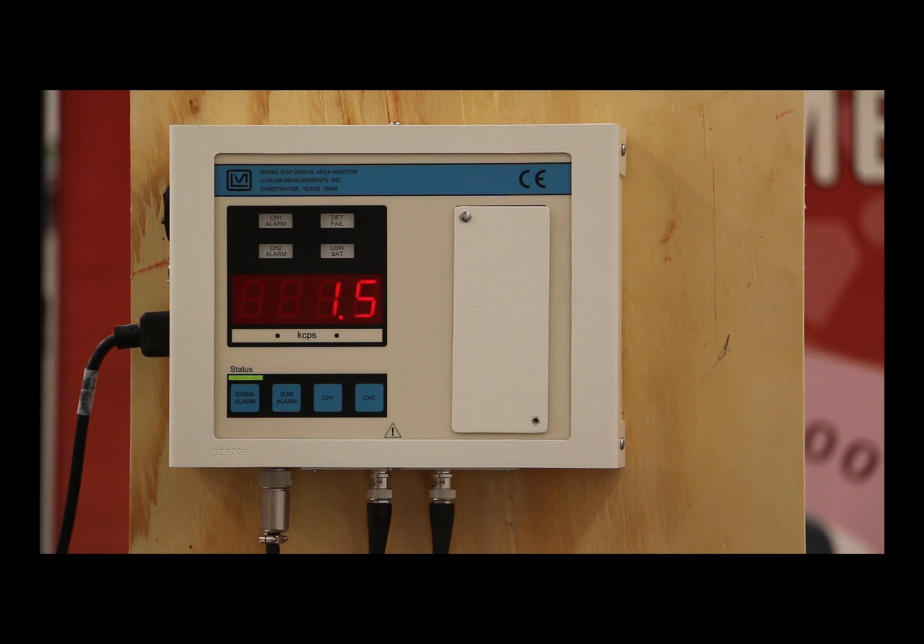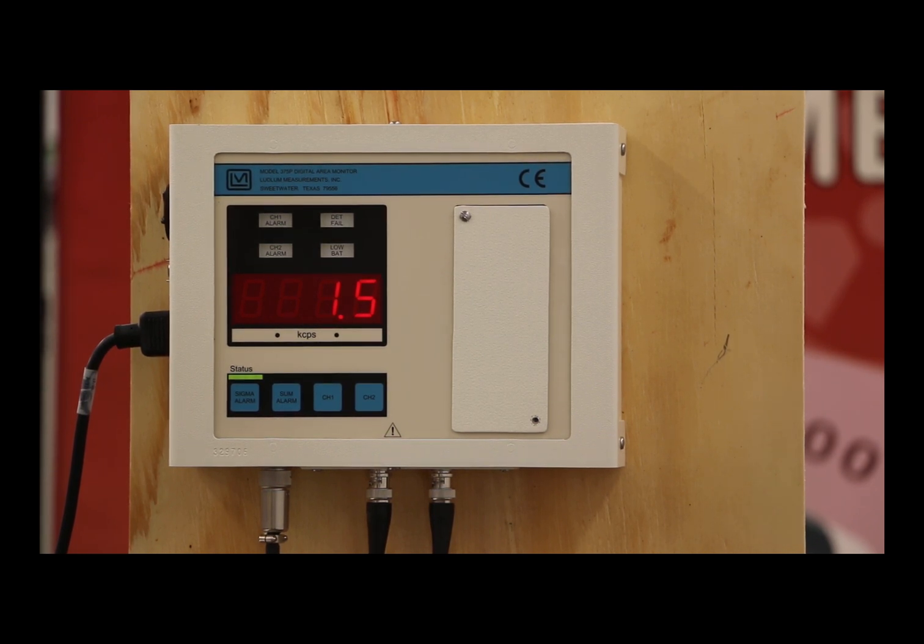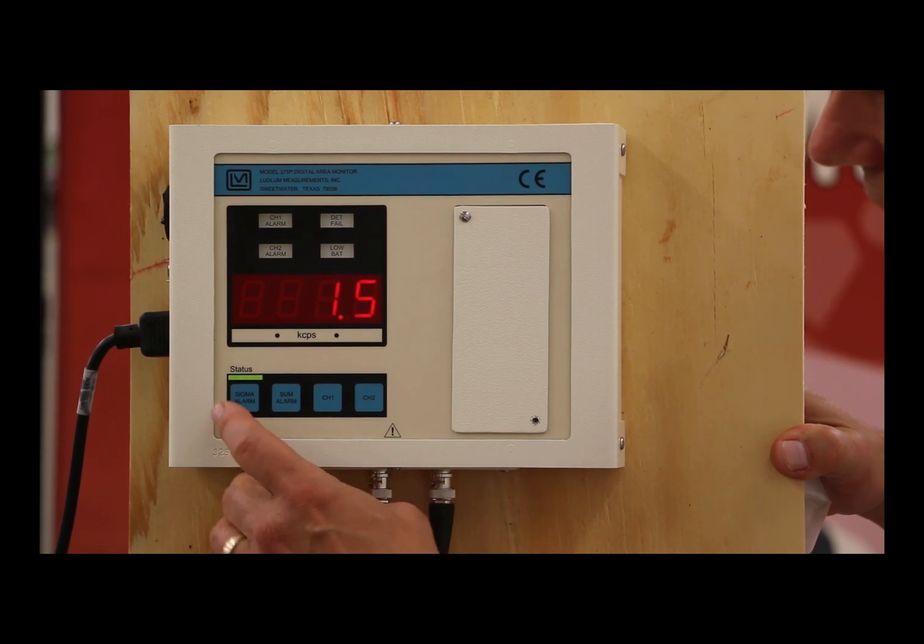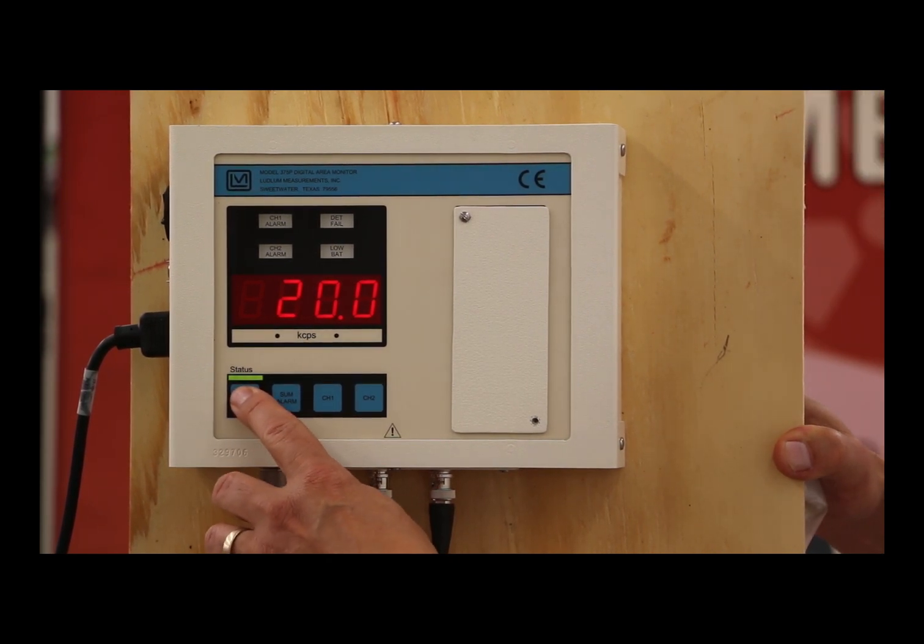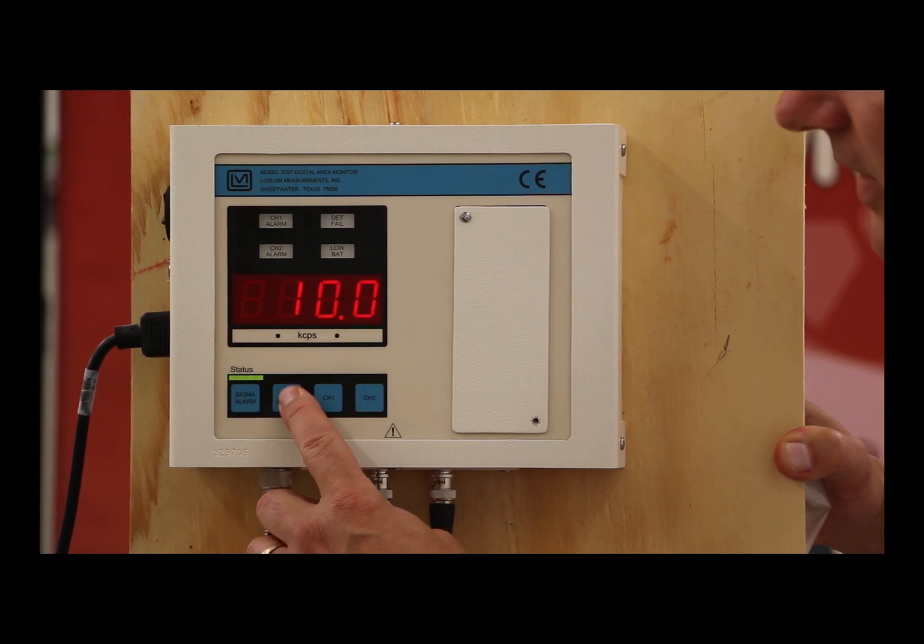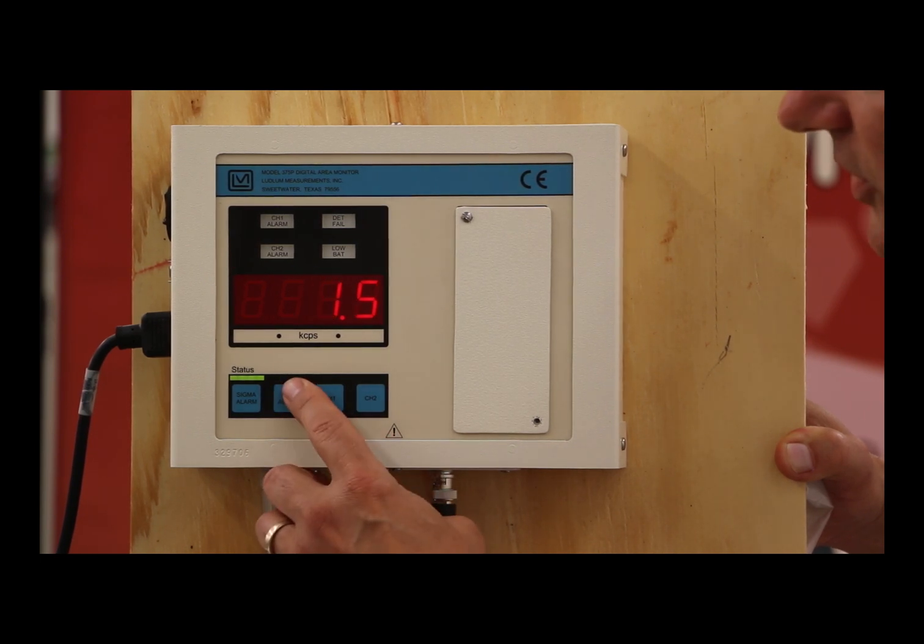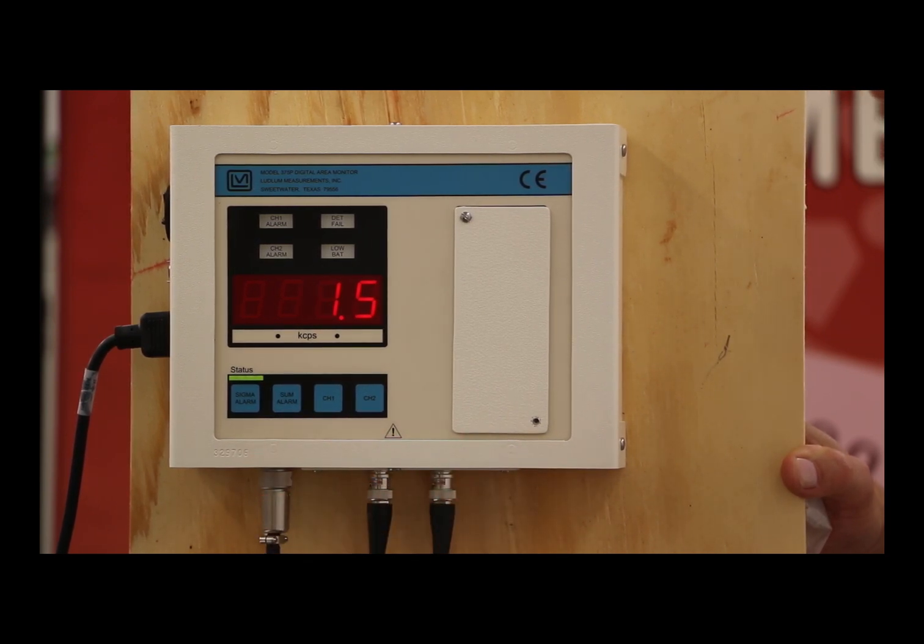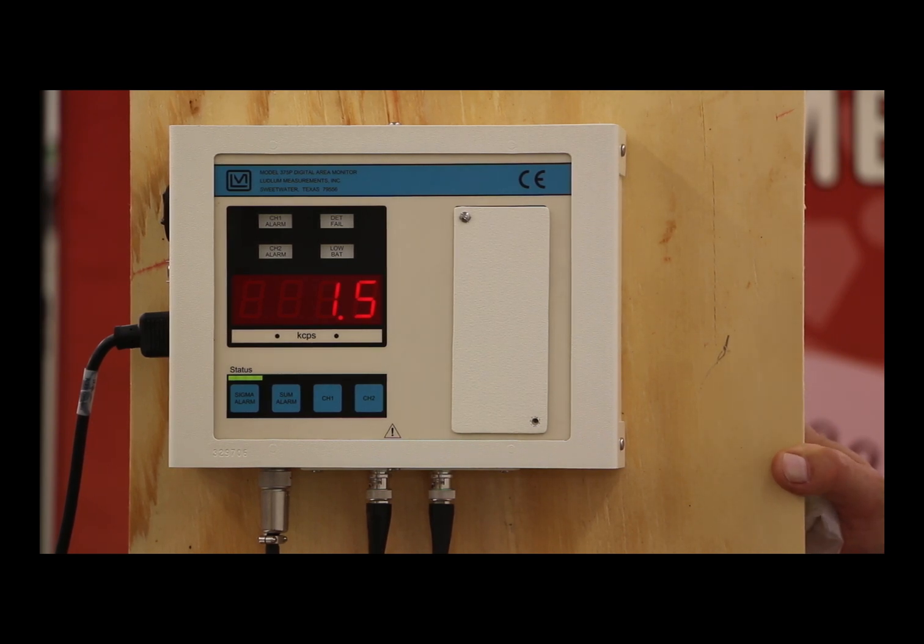The last thing I want to talk about is the setting of these alarms and how you can see that on the screen. If I push the sigma button, you'll see 20 sigma is the setting. If I push the sum alarm, you'll see that this is in terms of 10,000 counts per second is what the upper level is. As you can see, I'm sitting here at 1,500 to get to 10,000. That factory setting is quite a bit higher than what you're normally going to see in background.